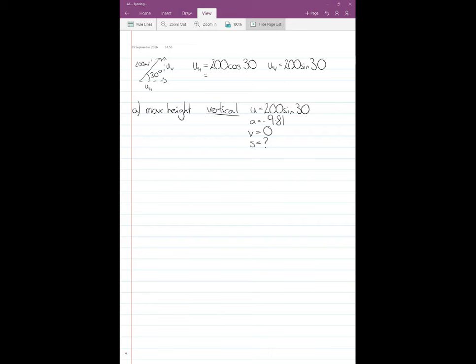So I know I've got u, a, v, and s. The next thing I need to do is select an equation. The equation that has all of those in is v squared equals u squared plus 2as. I'm then going to rearrange that and make s the subject. So that gives me s equals v squared minus u squared over 2a.